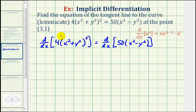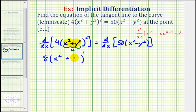Looking at the left side, notice this is a composite function, so we apply the chain rule, where the inner function is x squared plus y squared. Letting u equal that inner function, we apply the general power rule: 4u squared becomes 8u to the first, where u is x squared plus y squared, times u prime — the derivative of x squared plus y squared with respect to x, which we'll find in the next step.